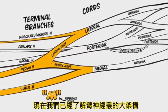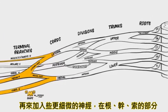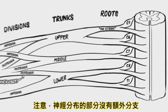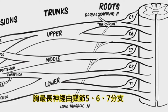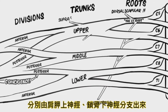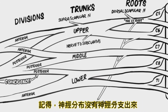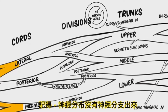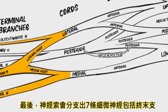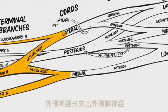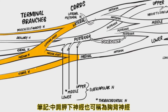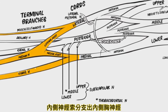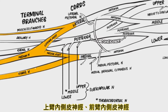Now that we understand the major structural features of the brachial plexus, it's time to add in important smaller nerves that arise from the roots, trunks, and cords. Note that no nerves arise directly from the divisions. Two nerves arise from the roots: the dorsal scapular nerve, which is a branch of the C5 root, and the long thoracic nerve, which is formed by branches from the C5, C6, and C7 roots. Two nerves also arise from the trunks — both the suprascapular nerve and the nerve to subclavius are branches from the upper trunk. The cords give rise to seven nerves in addition to their terminal branches. The lateral cord gives off the lateral pectoral nerve. The posterior cord gives off the upper, middle, and lower subscapular nerves — note that the middle subscapular nerve is often called the thoracodorsal nerve. The medial cord gives off the medial pectoral nerve, the medial brachial cutaneous nerve, and the medial antebrachial cutaneous nerve.